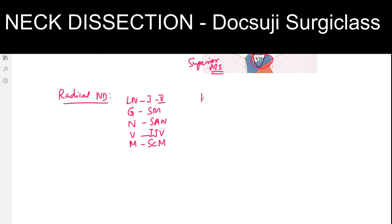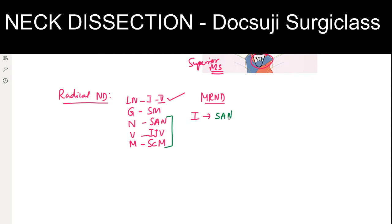The modified radical neck dissection (MRND) is a modification of this. There are three types. In all MRND types, you remove Level 1 to 5 lymph nodes, but preserve certain structures. In Type 1, you preserve one structure — the spinal accessory nerve.